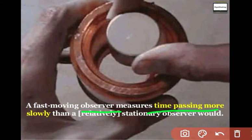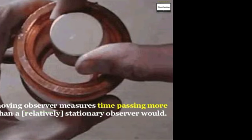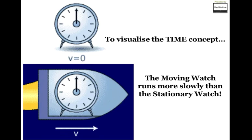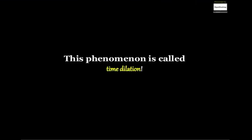He conceptualized that time does not pass at the same rate for everyone. A fast moving observer will measure time more slowly than a stationary observer. The moving watch runs more slowly than the stationary watch. This phenomenon is called time dilation.